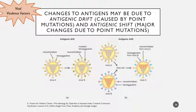For viruses, antigenic drift involves slow, gradual changes in antigens like neuraminidase and hemagglutinin due to small point mutations over time. Antigenic shift represents a major change in the viral genome, resulting in completely different neuraminidase and hemagglutinin proteins.